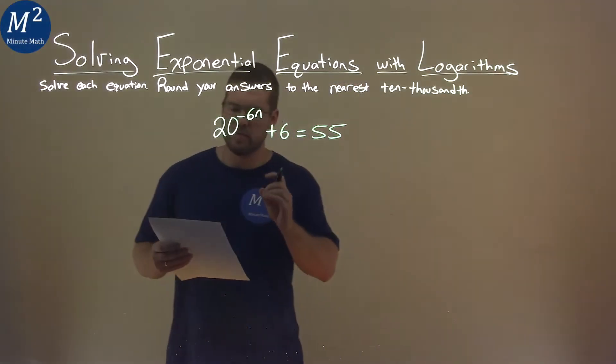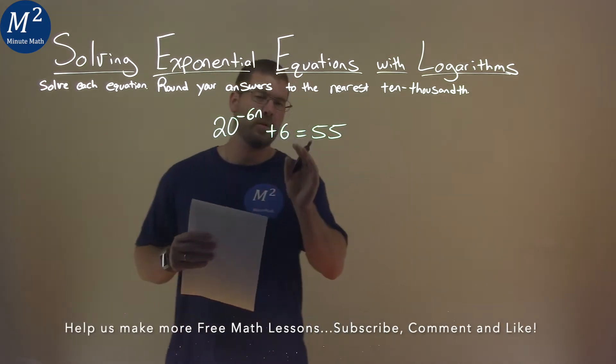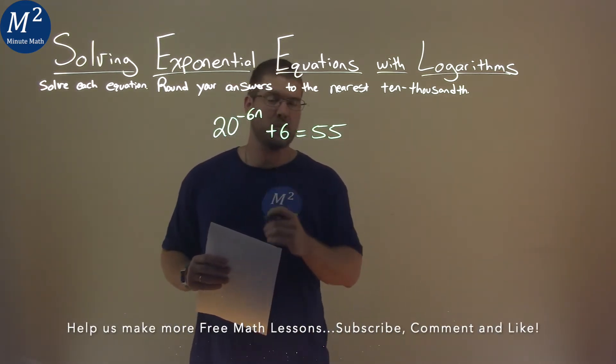We're given this problem right here: 20 to the negative 6n plus 6 is equal to 55, and we need to solve this equation.